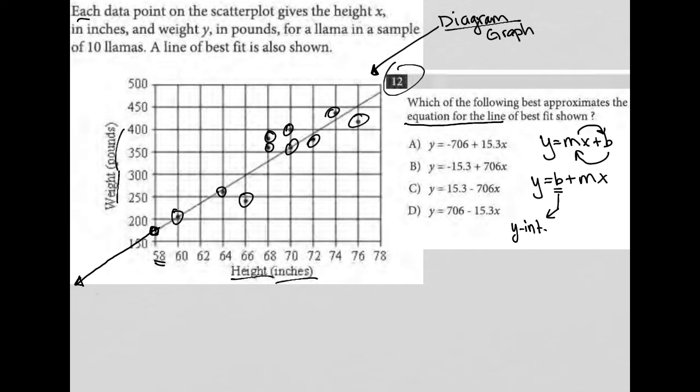intercept, and we've already said I can't tell what that is just by looking at the graph. The m value is always going to be the slope, and I just like to write down as a reminder that slope is always rise over run.